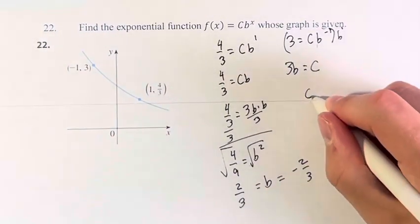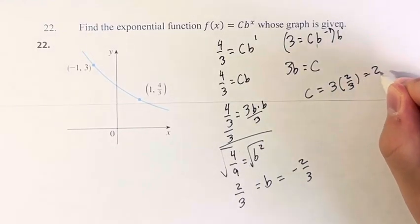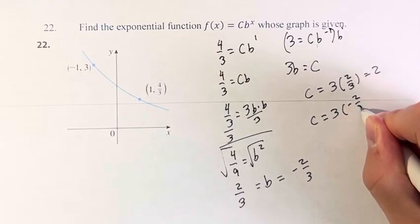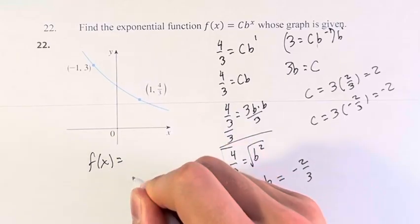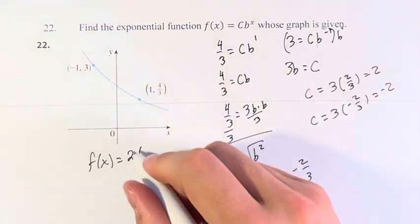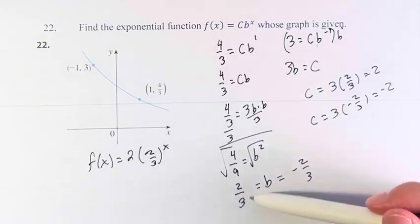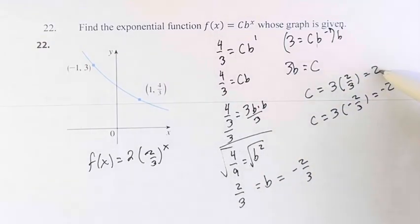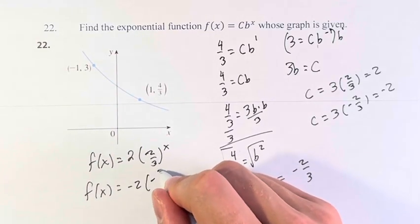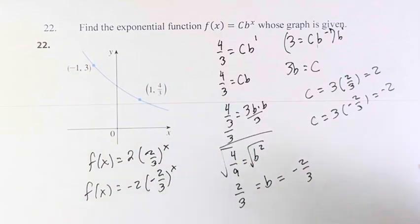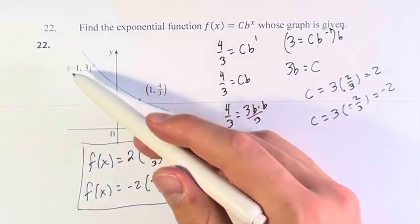c = 3b. So c = 3 times 2/3, which is 2. So we have f(x) = 2(2/3)^x, because when b = 2/3, c = 2. And f(x) = -2(-2/3)^x, because when b is -2/3, c is -2. Both of these give us this function.